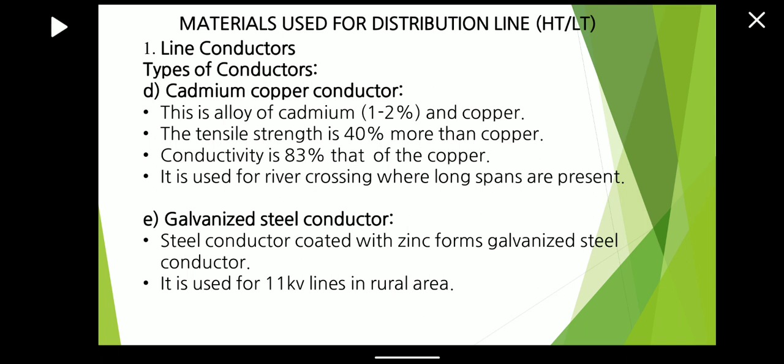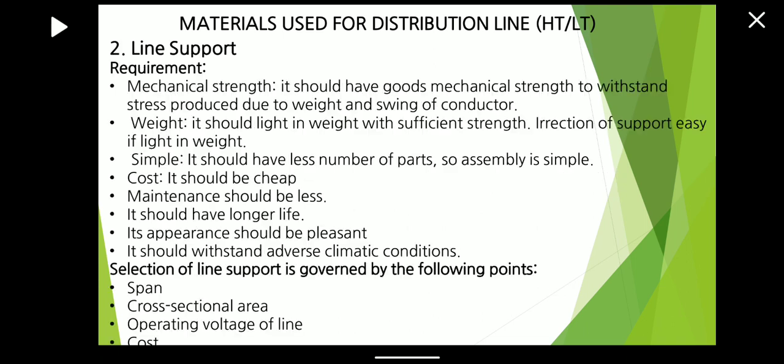Next is the galvanized steel conductor. A steel conductor coated with zinc forms the galvanized steel conductor. In olden days, it was used for 11 kV lines in rural areas. These are the different types of conductors.